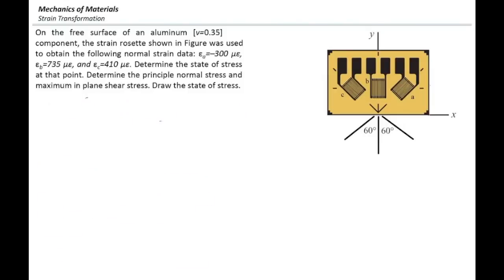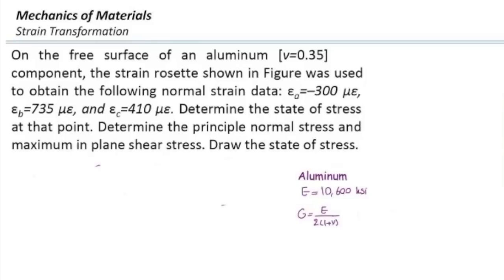Let's solve a problem to see how we use these equations on a real-world example. On the free surface of an aluminum component, the strain rosette shown in the figure was used to obtain the following normal strain data: εa = −300 microepsilon, εb = 735 microepsilon, and εc = 410 microepsilon. Determine the state of stress at that point, the principal normal stresses, and the maximum in-plane shear stress. Also draw the stress element. The aluminum has E = 10,600 ksi, Poisson's ratio ν = 0.35, and G = E / [2(1+ν)] = 3,925 ksi.